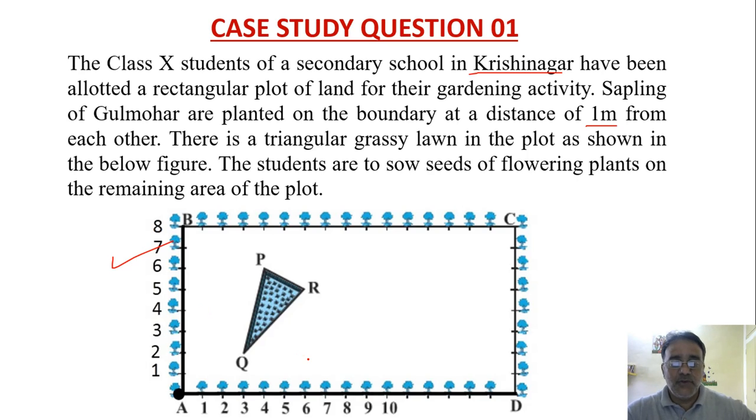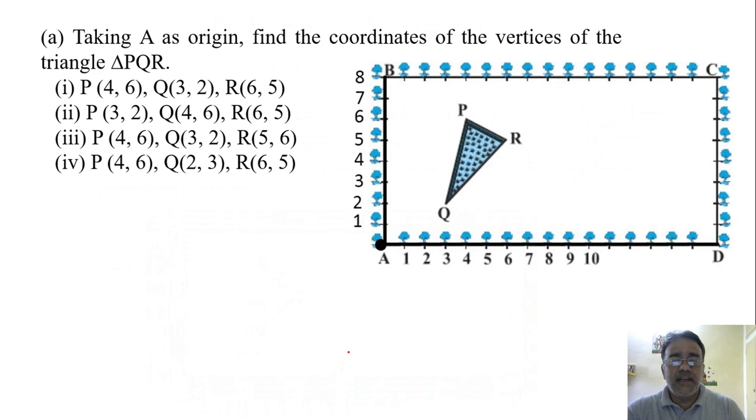So the first question is taking A as origin, we have to find the coordinates of the vertices of the triangle PQR. So see the point P first. The x coordinate of point P is 4 and the y coordinate of point P is 6. So the coordinate of P is 4, 6. So 4, 6 is in three options here.